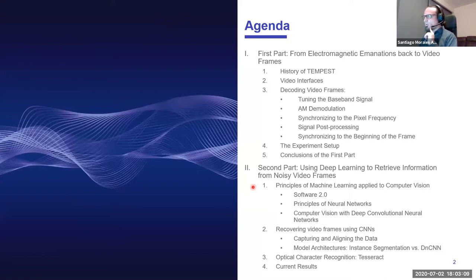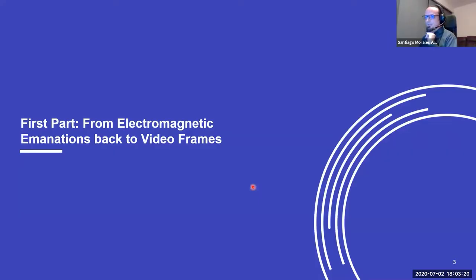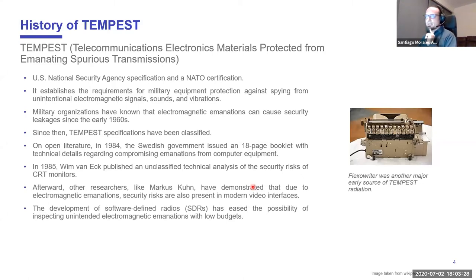In this first part, I'm going to present a review of what is TEMPEST, the history of TEMPEST, and how we can reconstruct video frames from remote video interfaces, a remote display monitor. TEMPEST is an acronym for Telecommunications Electronics Materials Protected from Emanating Spurious Transmissions. It is a United States National Security Agency specification and a NATO certification establishing requirements for military equipment protection against unintentional electromagnetic emanations.